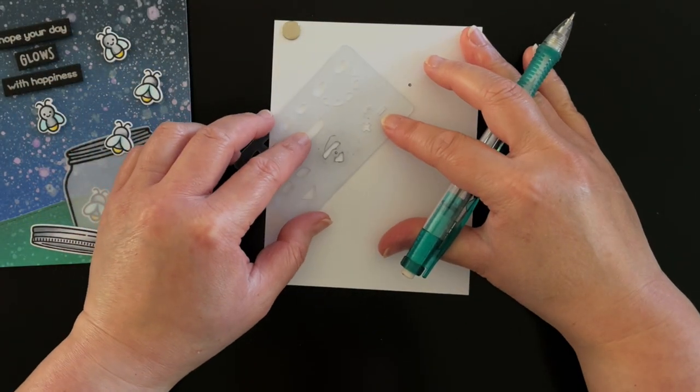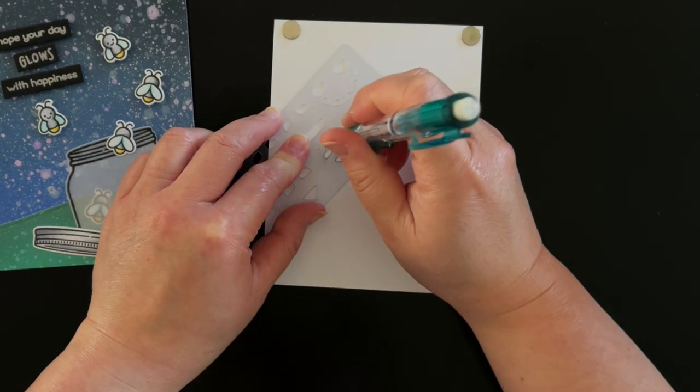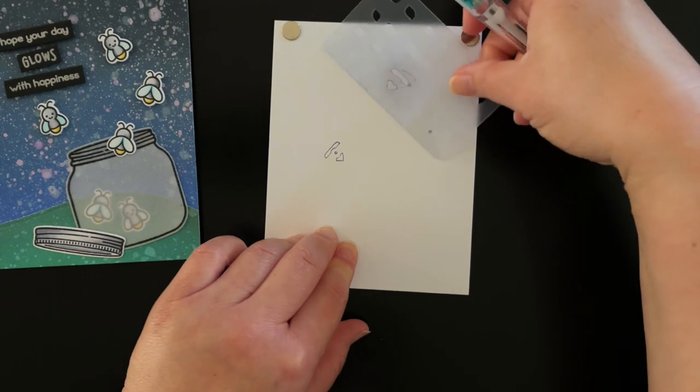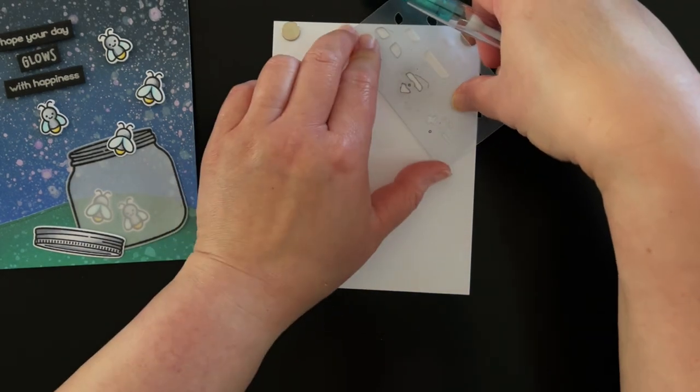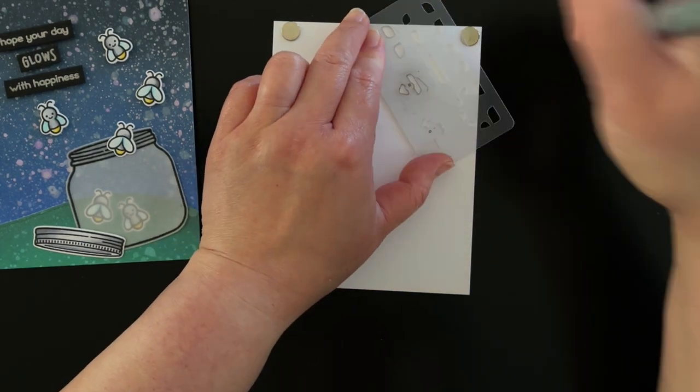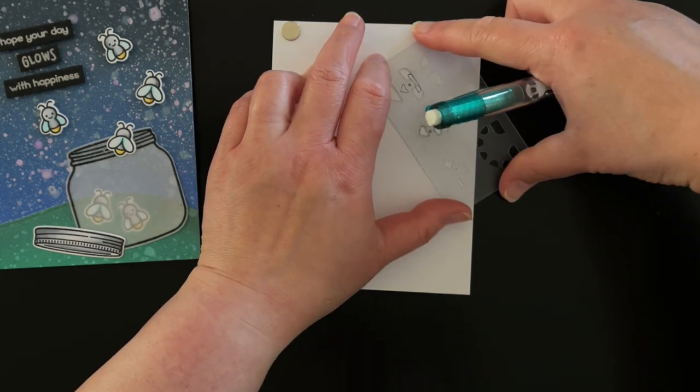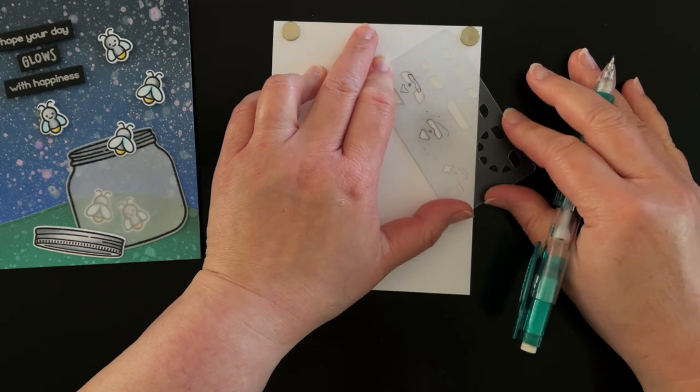To start, I used the template I created in the first video of this series to trace the holes of my card panel onto an A2 panel of white cardstock. I center the craft stencil over each traced dot and trace the outline of the sticker. I make sure that the positive edge of the traced outline is closest to the outer edge of my panel for each sticker.